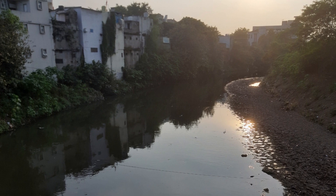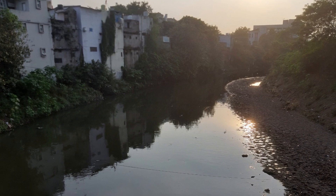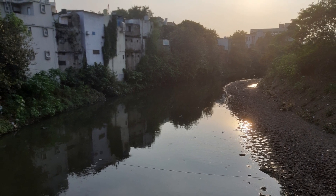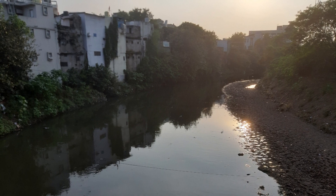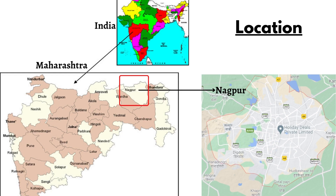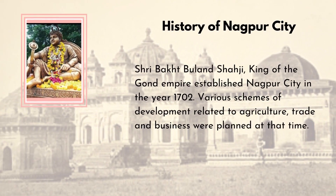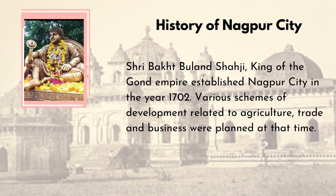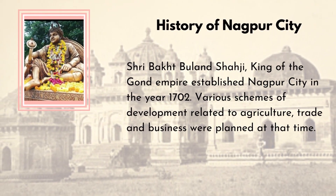Now let us start the journey of Nag River about its origin, flow path, tributaries, different order streams, current condition and related environmental issues. It is generally believed that the name of Nagpur is derived from the Nag River, which is located in the eastern part of Maharashtra in India. Shri Bhakt Bulan Shaji, king of the Gond Empire, established Nagpur city in the year 1702.